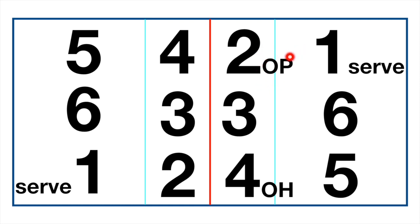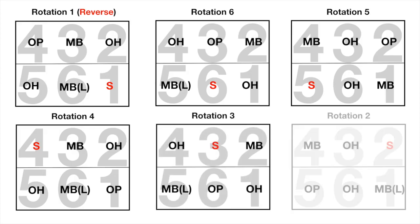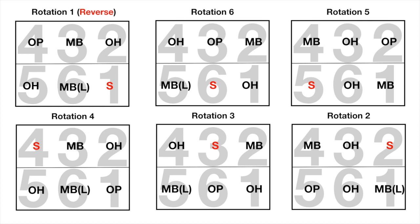You can see I mark the opposite spiker at position two and outside hitter at position four, because the opposite spiker usually attacks from position two and the outside hitter usually attacks from position four. You need to remember this — we will use it later. Here are the positions of each rotation, widely used by men's and women's volleyball teams of every nation.